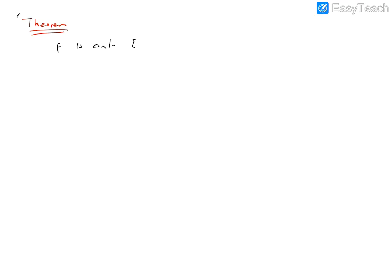I can give a theorem now. A function f that is continuous on the closed interval [a, b] has both an absolute maximum and an absolute minimum. This is very important.